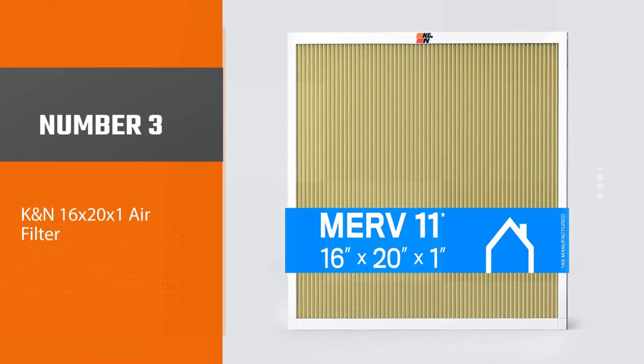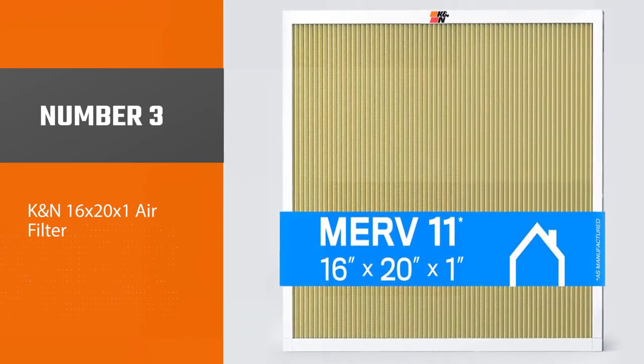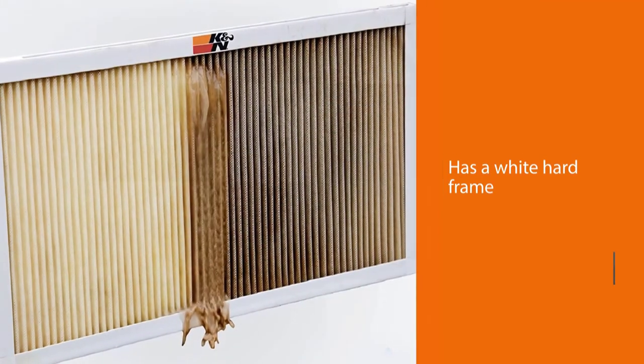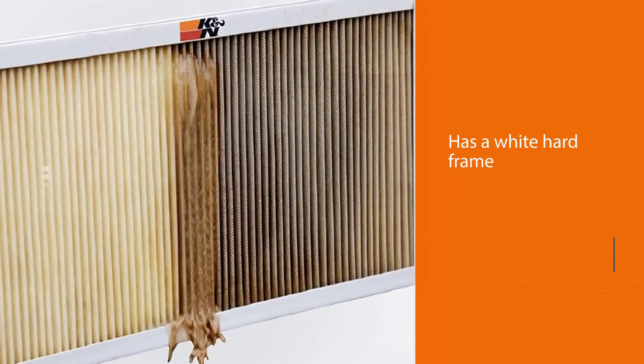Number 3: K&N 16x20x1 Air Filter. The K&N furnace air filter has a white hard frame and beige filtration wall that's made of synthetic materials.